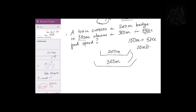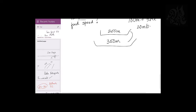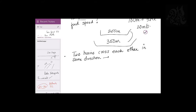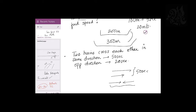One last thing in trains from an exam perspective: two trains crossing each other. In the same direction, let's say they take 50 seconds to cross each other. In the opposite direction, they take 20 seconds. You need to find the ratio of their speeds.